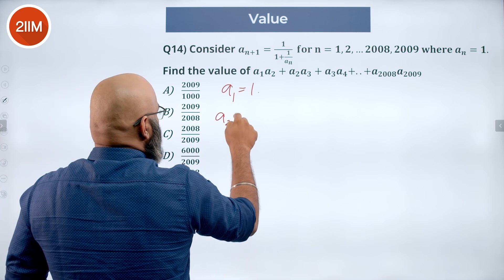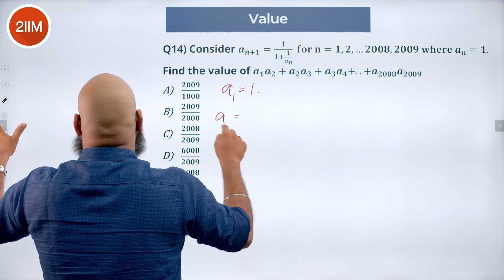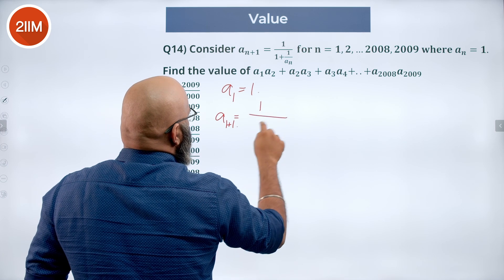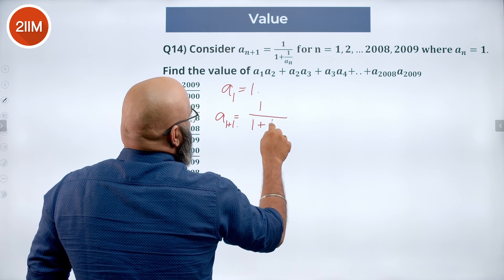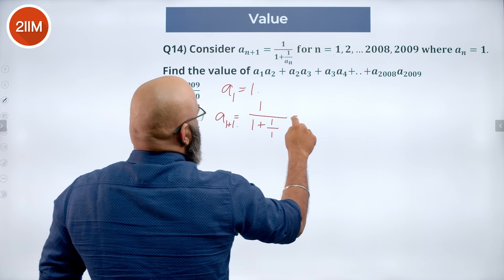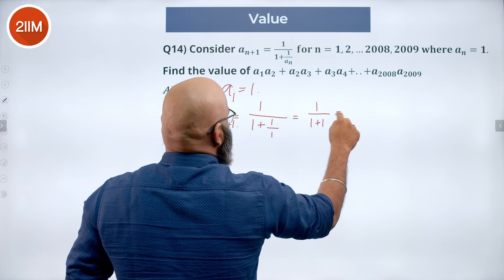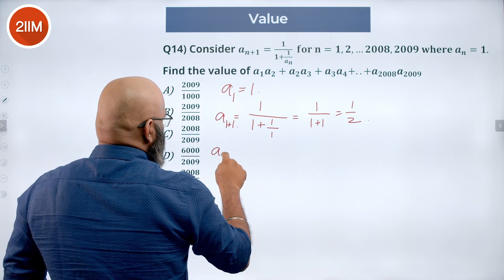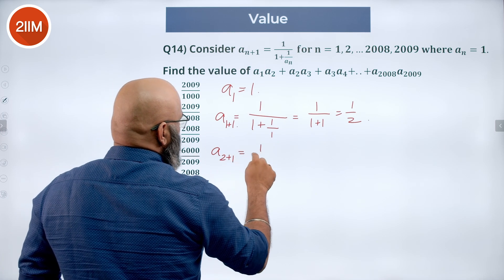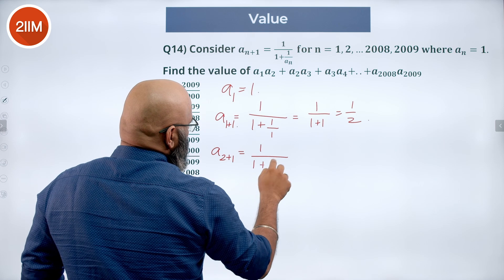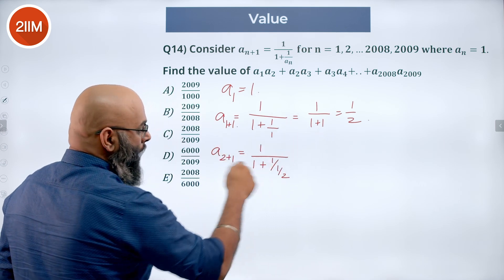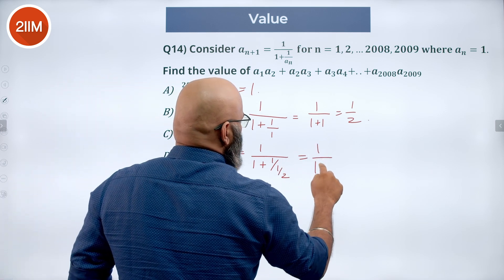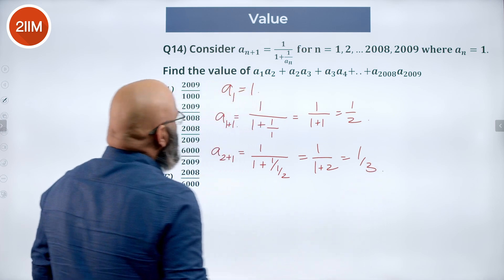To find a(2), we use a(1+1) = 1 / (1 + 1/a(1)) = 1 / (1 + 1) = 1/2. For a(3), similarly, 1 / (1 + 1/a(2)) = 1 / (1 + 1/(1/2)) = 1 / (1 + 2) = 1/3. So we see a pattern forming.